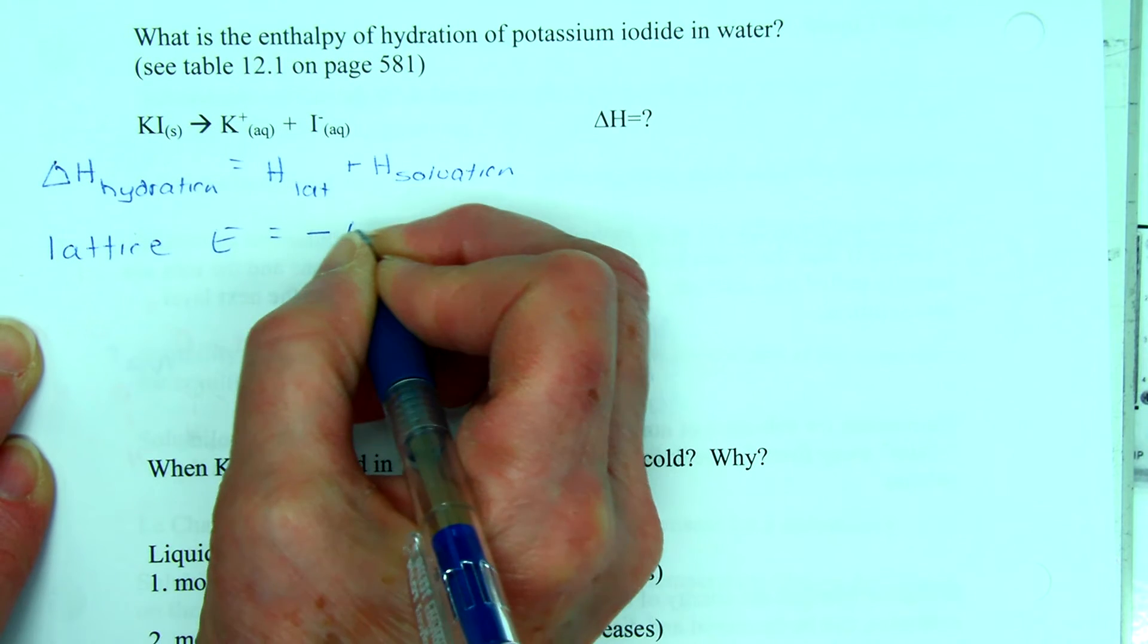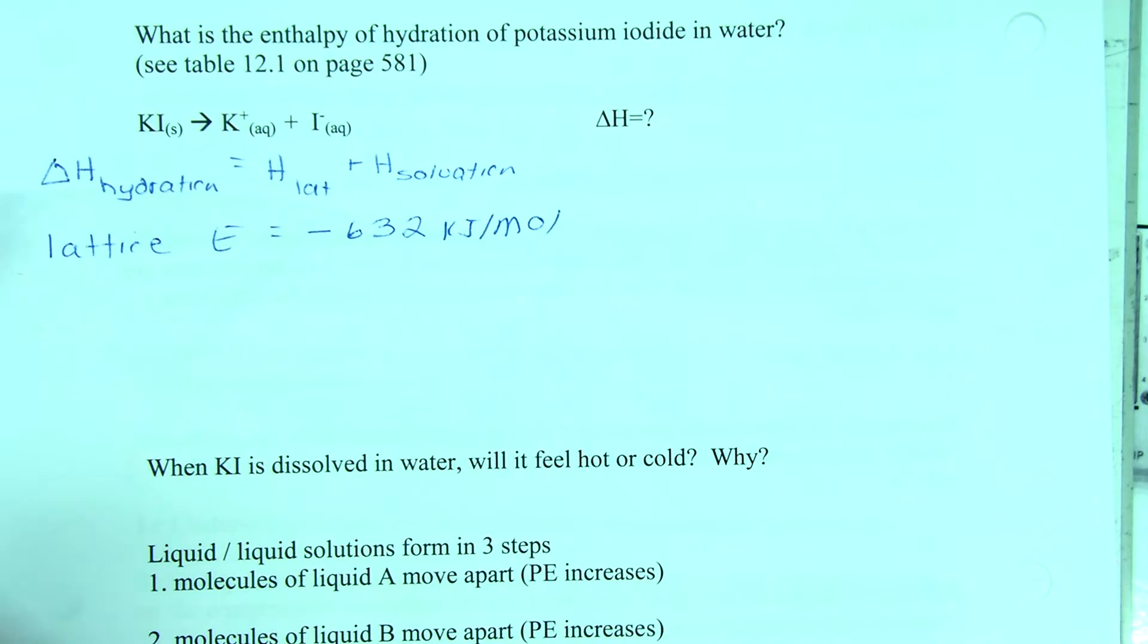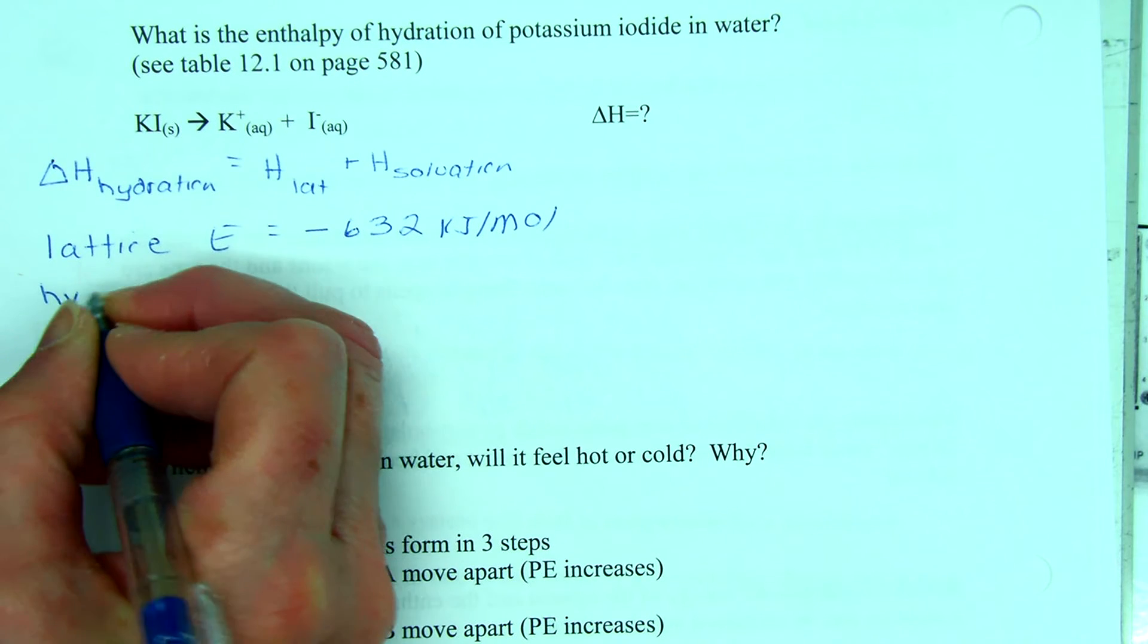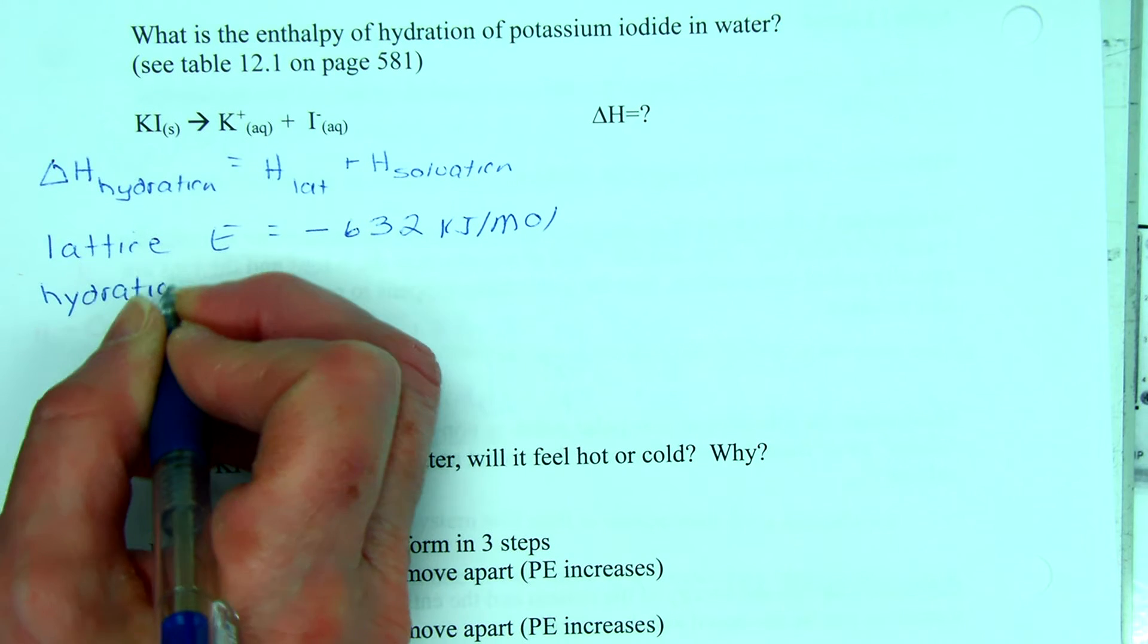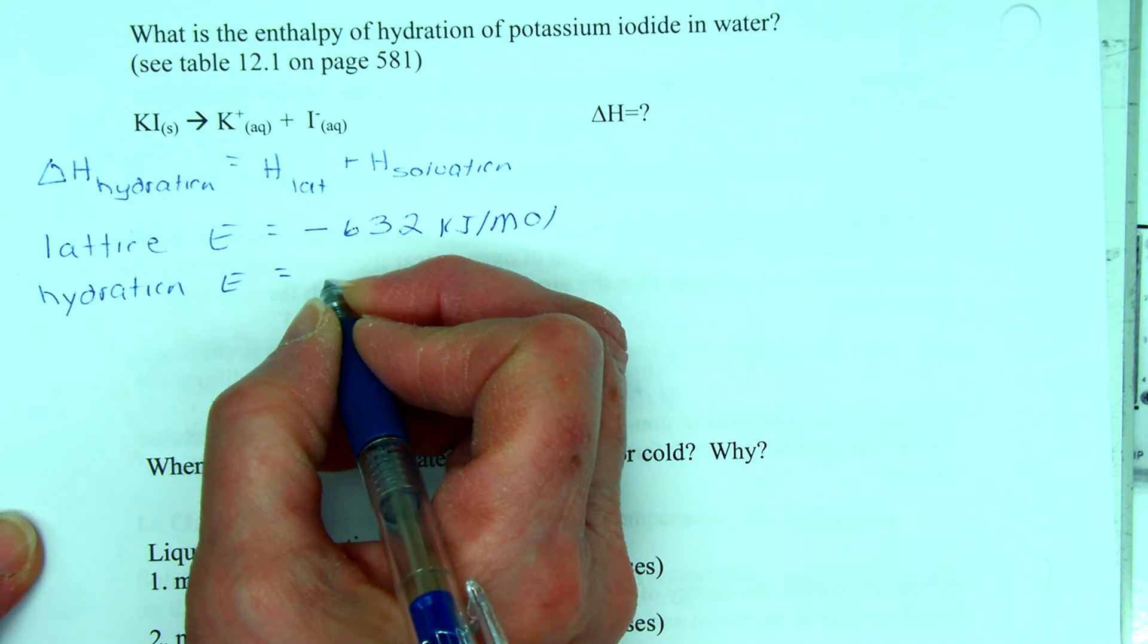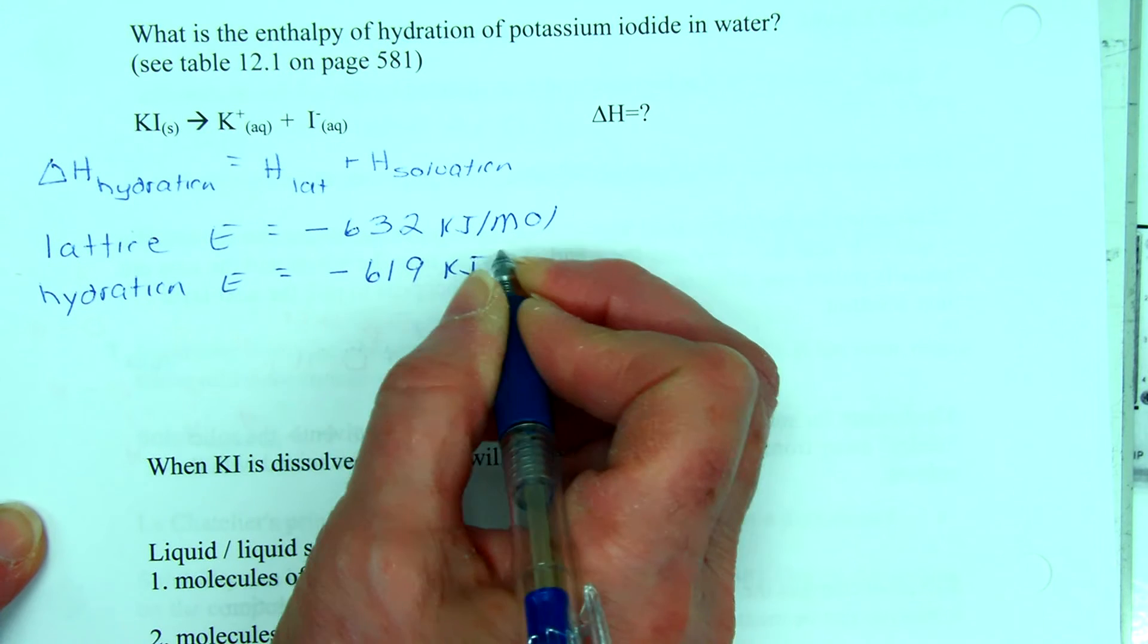So we look up in the book and we see that the lattice energy listed in the book is equal to negative 632 kilojoules per mole. That's how it's listed in the chart in the book because it's defined as the energy released when we form the lattice, but we are going to break the lattice so we have to change that sign. Then we look up the hydration energy or the salvation energy - salvation in water - and that is equal to negative 619 kilojoules per mole.